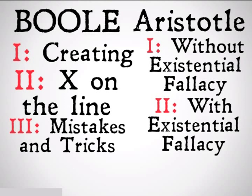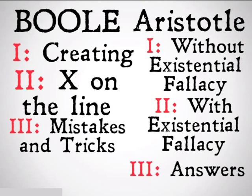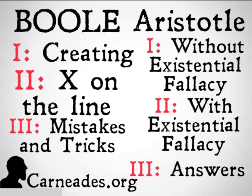Next up, we're going to be looking at the same set of categorical syllogisms, but without those terms existing — with the existential fallacy, or at least the Aristotelian existential fallacy. Remember, any argument that is valid for Aristotle but not valid for Boole is going to commit the Boolean existential fallacy, but not necessarily the Aristotelian existential fallacy. And finally, we'll look at some answers to problems dealing with validity for Boole and Aristotle. Watch a new video every single day for 100 days here at carnadies.org, and stay skeptical, everybody.